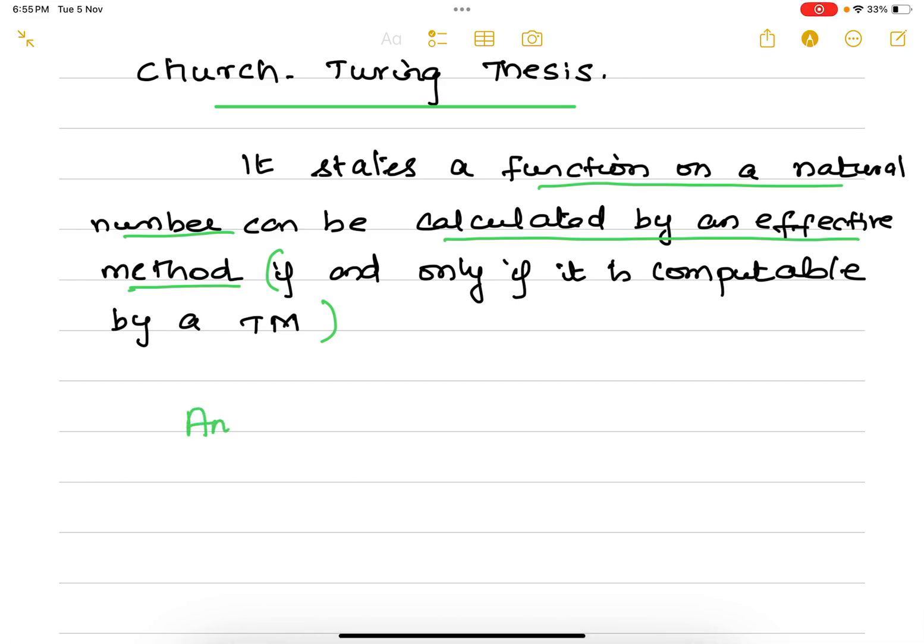In other words, we can say any reasonable model of computation is equivalent to a Turing machine. This is what is Church-Turing thesis.